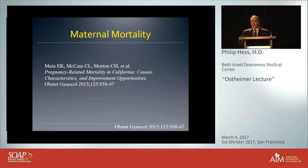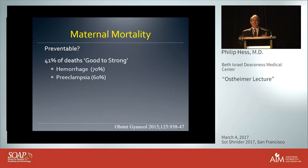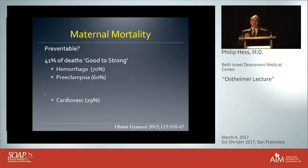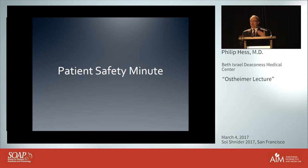A study on pregnancy-related mortality in California used a panel to review data and determine whether there was a good to strong likelihood the patient could have survived. Overall, 41% of maternal deaths had a good to strong likelihood of being prevented — especially deaths from hemorrhage (70%) or preeclampsia (60%). However, if a woman died from a cardiovascular condition, there was very low likelihood of being salvaged. Our patients are older and have more complex medical histories; if we continue doing the same thing, we'll continue to have the same outcomes.